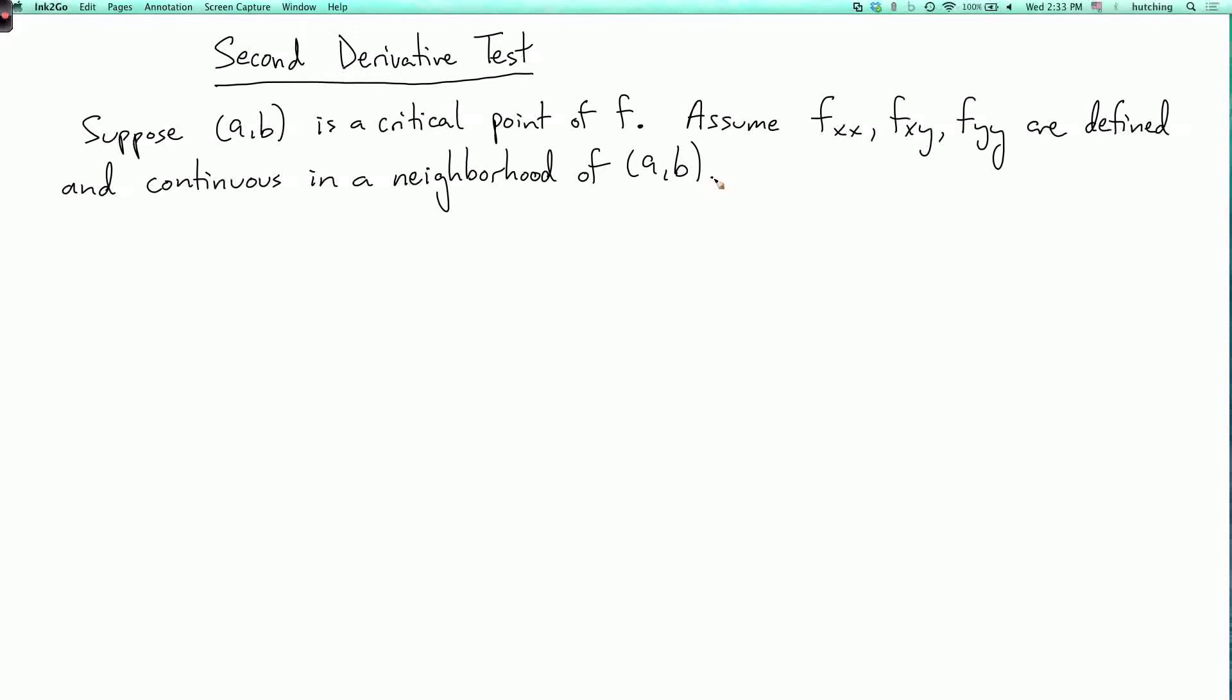Now in the single variable case, in that second derivative test, you just had one second derivative. And here we have three second derivatives, and there's also fyx but that's the same as fxy. So what are we supposed to do with these?